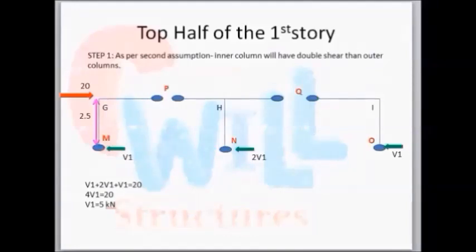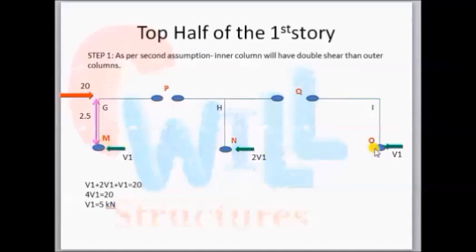Now let's cut the top story of the structure and take the top half of the first story. We cut from hinges M, N, and O, separating the three joints G, H, and I. We are also separating hinges P and Q at their respective joints, as shown in the diagram.